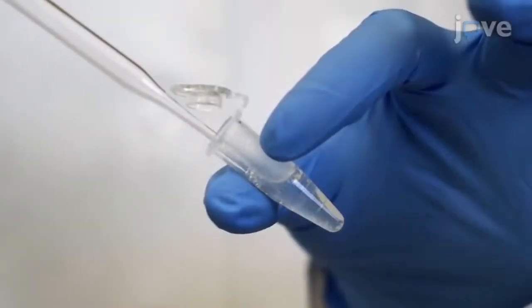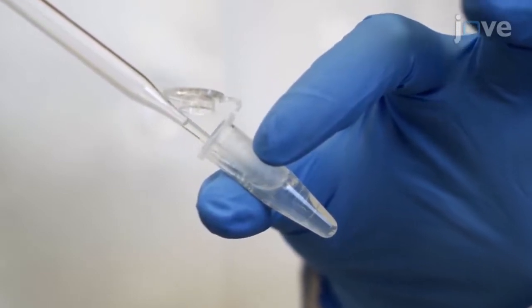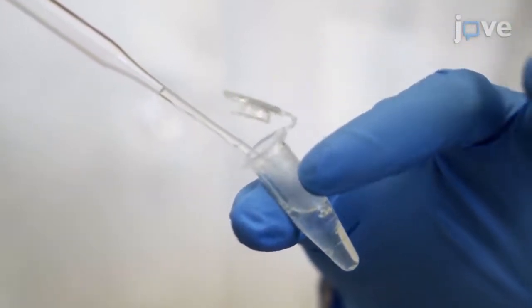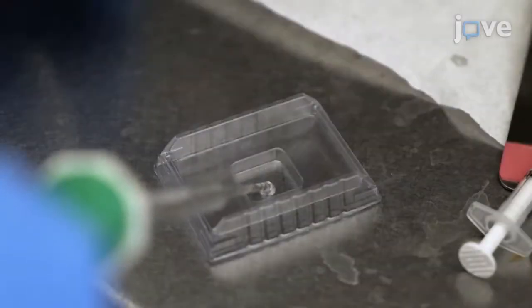To begin, transfer previously fixed and prepared 48-hour post-fertilization chimeric zebrafish embryos from a tube with 15-25 OCT mixture to a plastic mold using forceps, minimizing any transfer of the mixture.